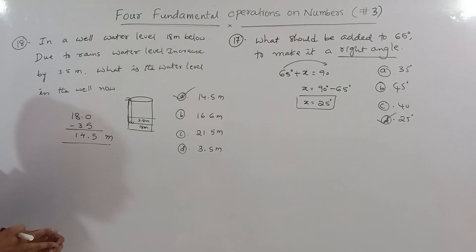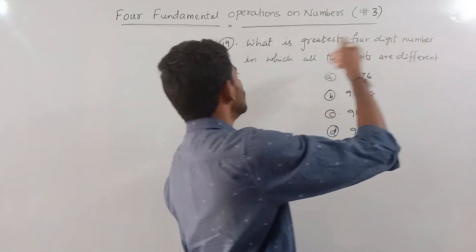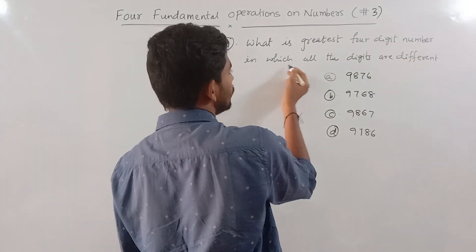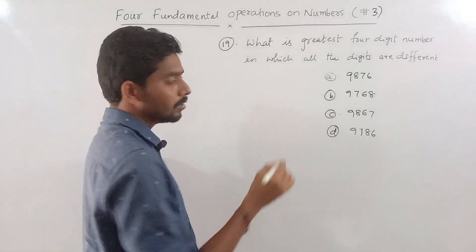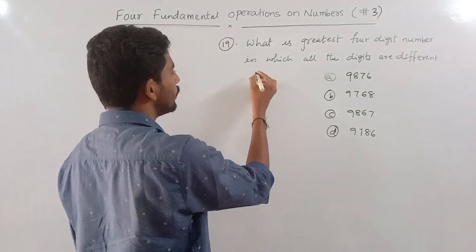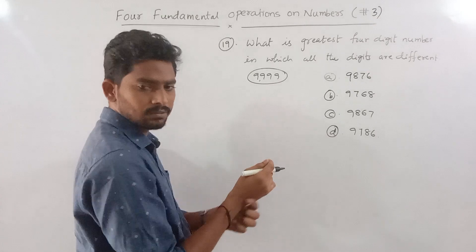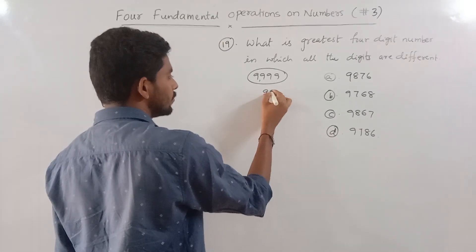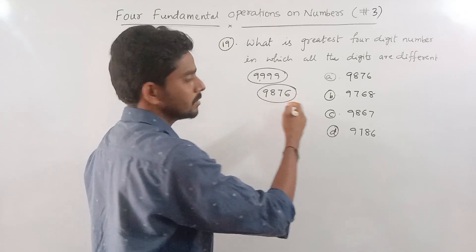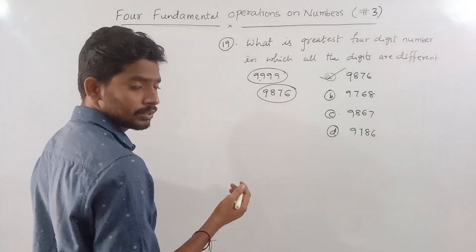Question 19: what is the greatest four-digit number in which all the digits are different? The greatest four-digit number with all different digits — starting with the largest available digits: 9, 8, 7, 6. So the answer is 9876.